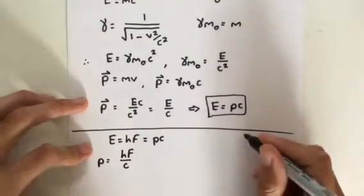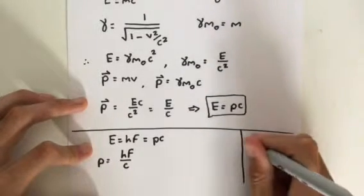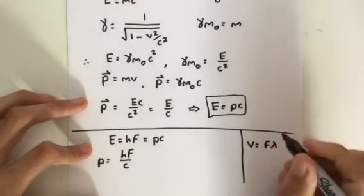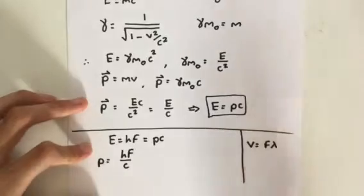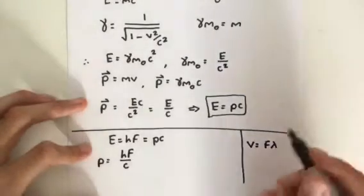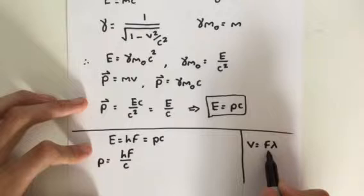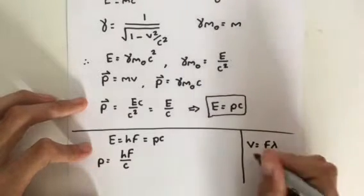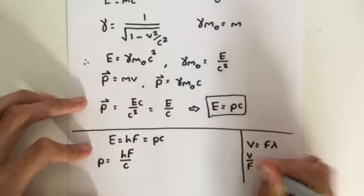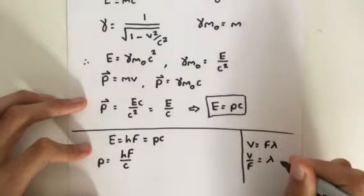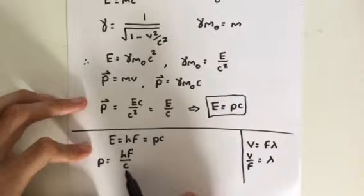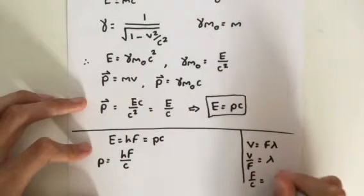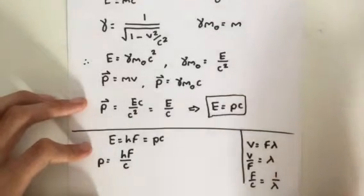So we know, or I hope you know, that V is equal to F times lambda. The velocity of a particle, or wave, well that's quantum mechanics. But the velocity of a particle is equal to F times lambda. So we know that V divided by F is lambda. But we have F divided by C. Therefore, F over C is going to equal 1 divided by lambda, the inverse of lambda.